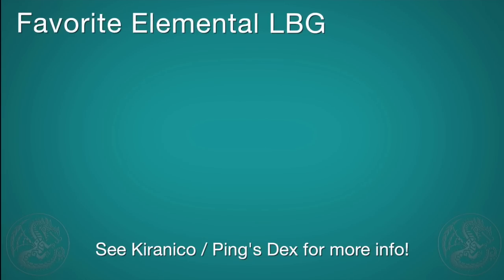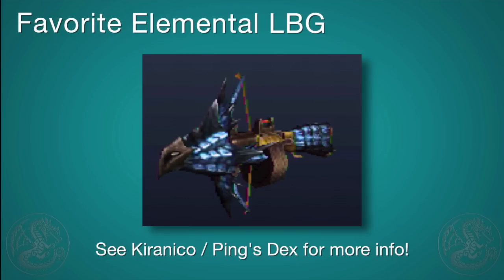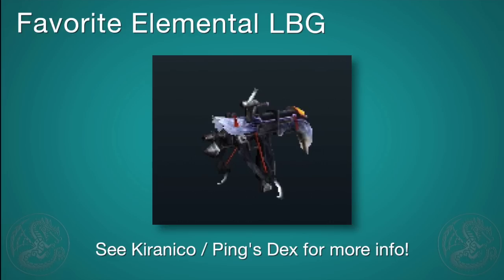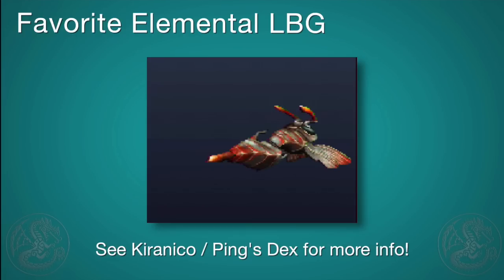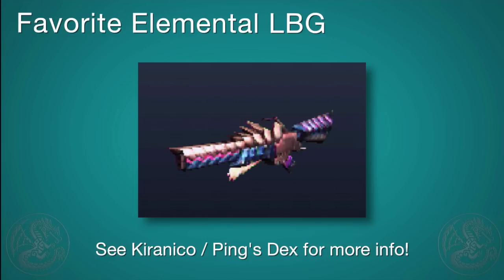For fire, the Wrath of Luce light bowgun is the go-to — it has Normal 2 on rapid, high attack, and fire on rapid, making it a great all-around bowgun. For water, the Ashen Kecha Wacha is a very good choice. Ice and Dragon definitely go to the Rusted Kushala with its incredibly high raw. Thunder would go to the Stygian Zinogre — a well-rounded weapon that excels at much more than just elemental shots, but for thunder it is the king.